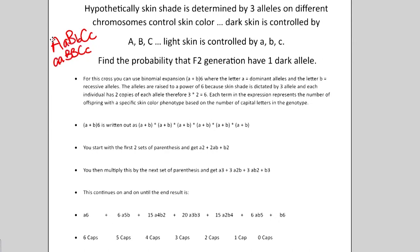We're going to start with the P generation. Remember that for the P generation we have a true cross — a homozygous dominant and a homozygous recessive parent. So one parent has all capital letters and the other has all lowercase letters. When you cross these together you get an F1 generation that is all heterozygous, meaning one capital A and one lowercase a — one uppercase and one lowercase for each allele.